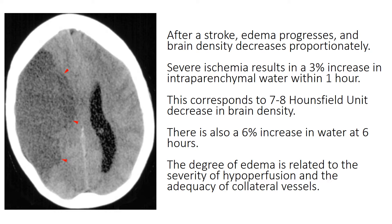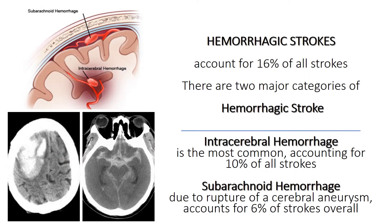The degree of edema is related to the severity of hypoperfusion and the adequacy of collateral vessels. There are two major categories of hemorrhagic stroke. Intracerebral hemorrhage is the most common, accounting for 10% of all strokes. Subarachnoid hemorrhage, due to rupture of a cerebral aneurysm, accounts for 6% of strokes overall.